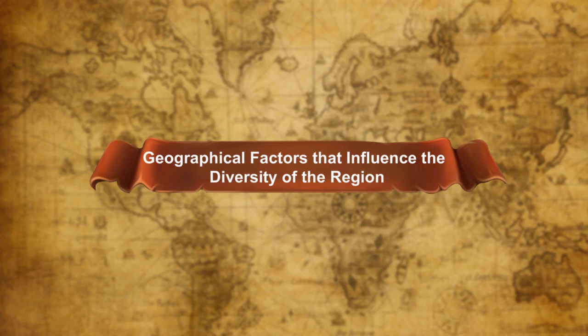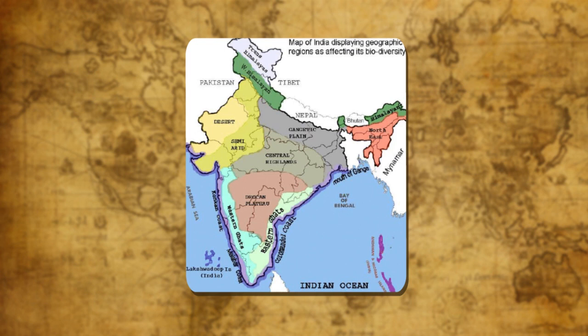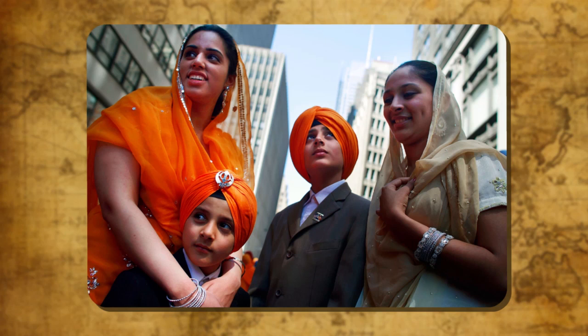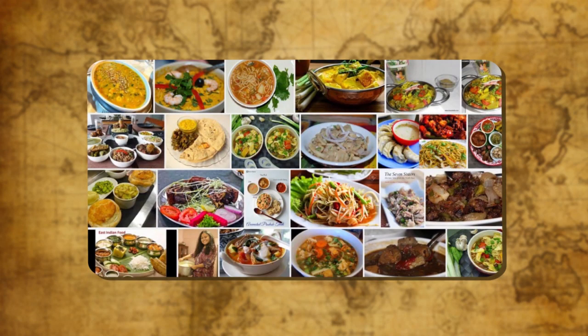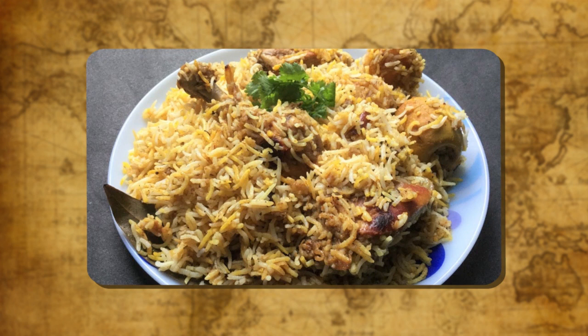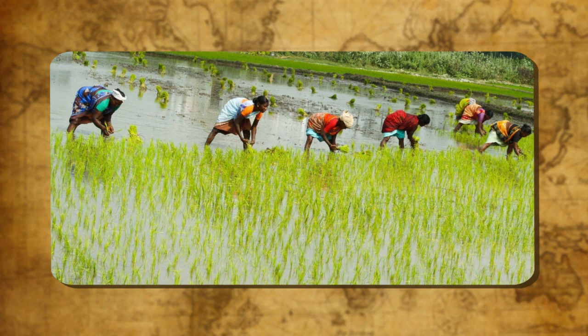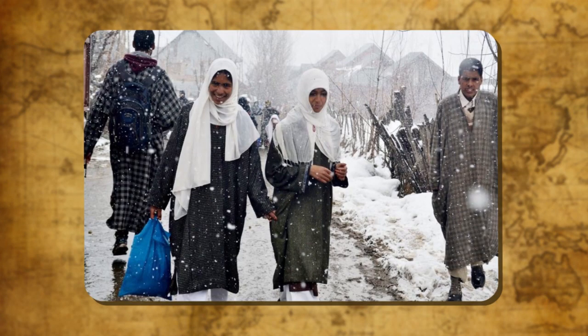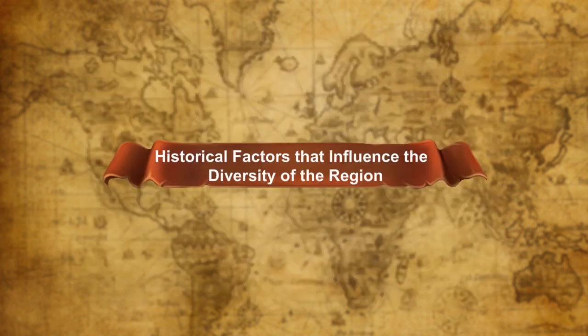India's diversity has been considered a source of her strength. Geographical factors influence the diversity of a region — the lifestyle and food habits of people depend on the geographical conditions of a place. In Bengal and Bihar, people prefer rice preparations because these states are suited for paddy cultivation. Kashmiris wear long woolen firans due to the cold climate. Thus geographical conditions have a deep impact on people's lifestyle.